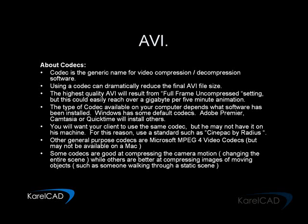In this case we're going to use a simple, standard codec such as CinePack by Radius. Other general purpose codecs are available — for instance, Microsoft MPEG-4 video codecs — but they're not available on a Mac. Some codecs are good at compressing camera motion, changing the entire scene, while others are better at compressing images of moving objects such as someone walking through a static scene.